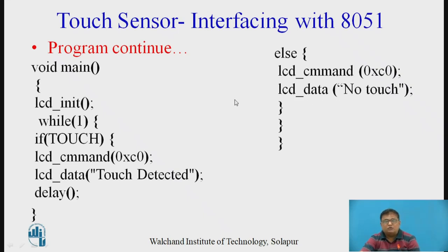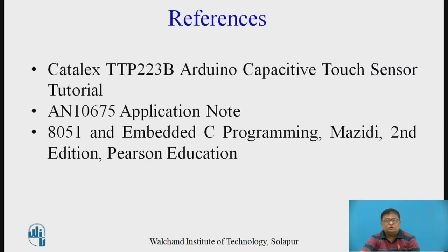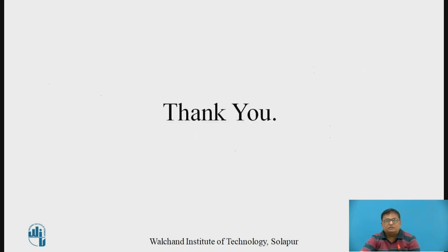In this presentation, only the structure of the program is shown; the detailed subroutines are not written. Try to complete this entire program yourself. The references used for this presentation are the datasheet of the touch sensor TTP223B, application note AN10675, and the 8051 book by Mazidi and Mazidi. Thank you.